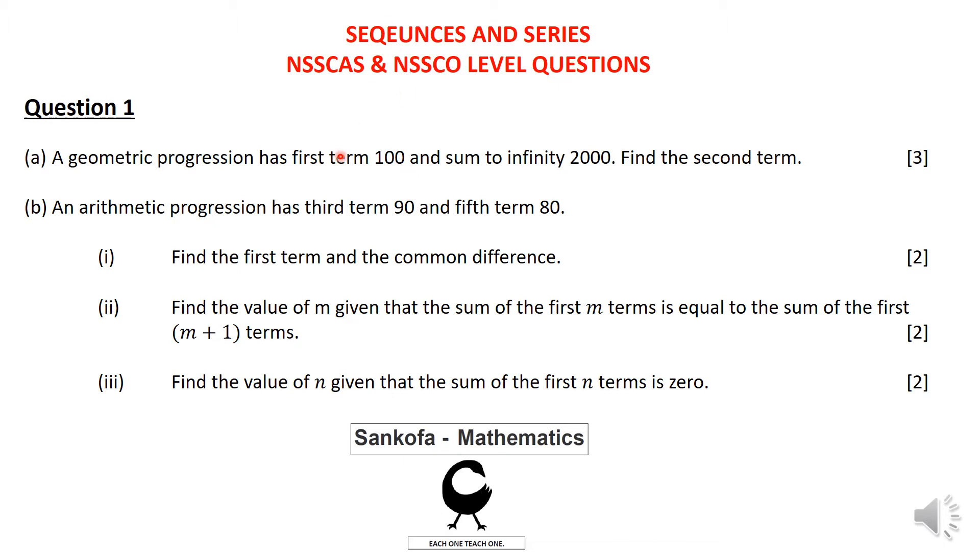This can be used by learners doing ordinary level as well as higher level and AS level. The first question is a geometric progression has a first term of 100 and sum to infinity is 2000. You are supposed to find the second term for three marks.